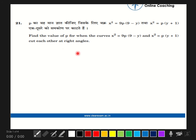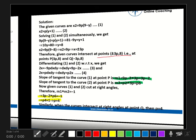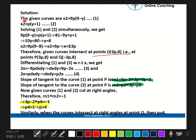Now let's come to the solution part. We have two equations of curves: x² = 9P(9 - y), take as first equation, and x² = P(y + 1) as second equation.